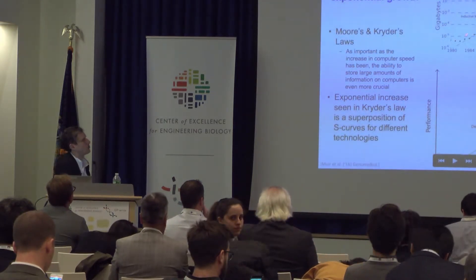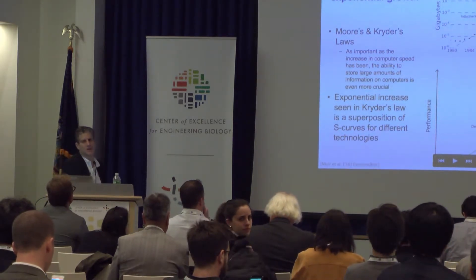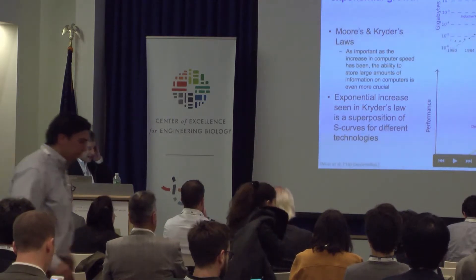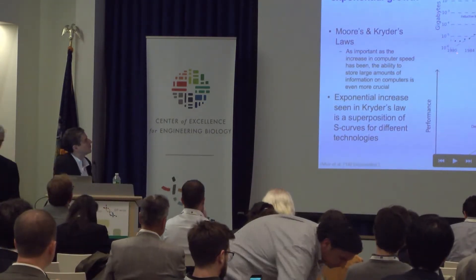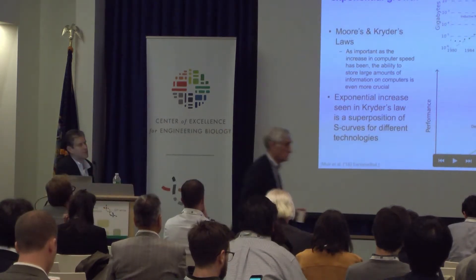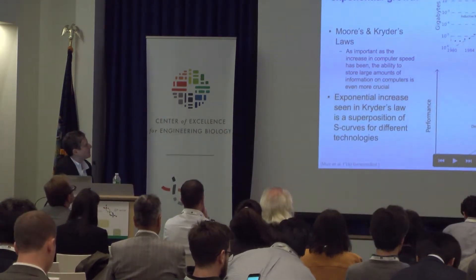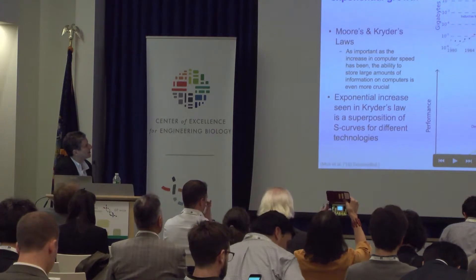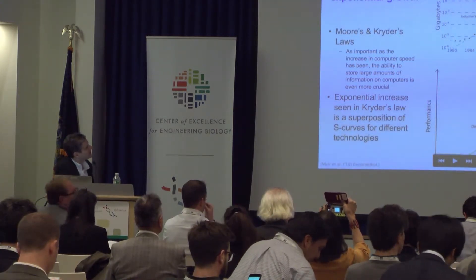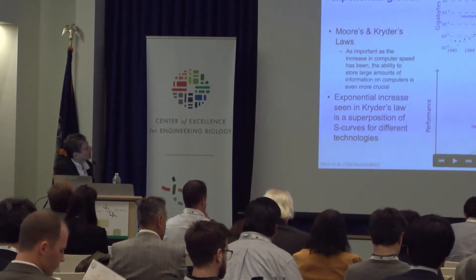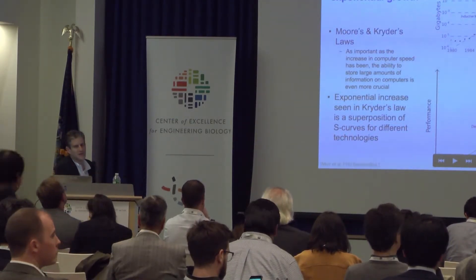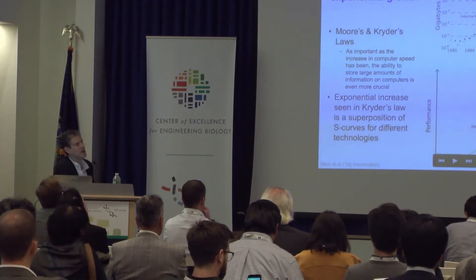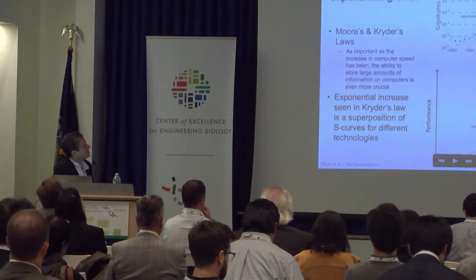It follows something called Kryder's Law. Kryder was the vice president of Seagate, and he came up with a scaling law, very much like Moore's Law, to describe the way hard drives get bigger and we can store more — exponential scaling just like Moore's Law. The key thing he observed is that this exponential curve is actually made up of a superposition of different S-curves.